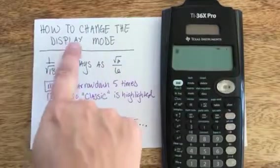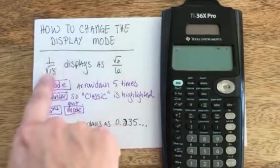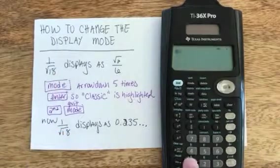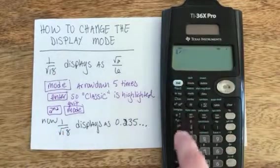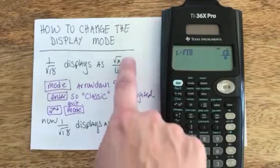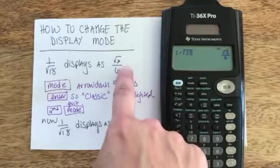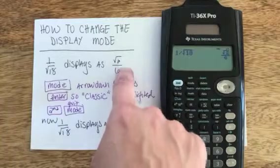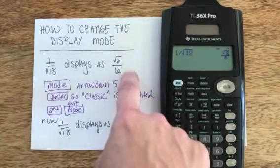Now I'm going to show you how to change the display mode on your calculator. So let's say you have the problem 1 divided by the square root of 18, and you see the display as the simplified, rationalized denominator of square root of 2 over 6.